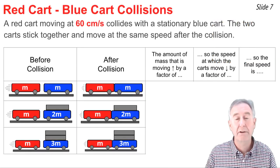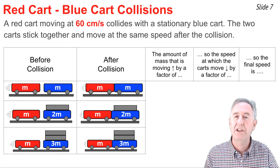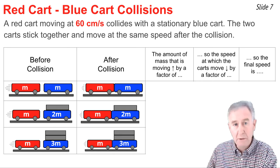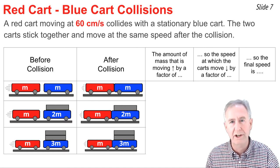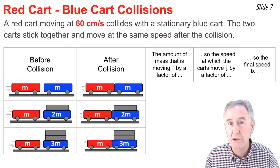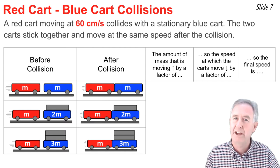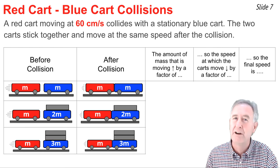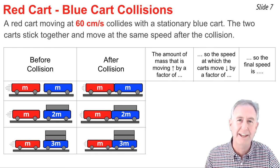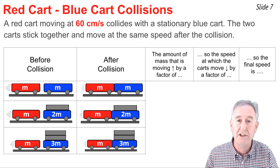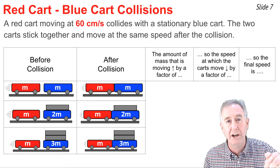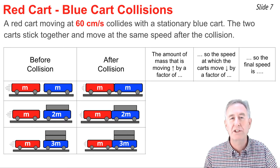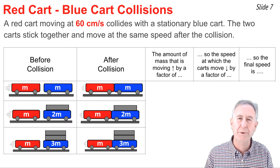Here are three similar problems: a red cart moving at 60 cm/s collides with a stationary blue cart, and they stick together moving at the same speed. Going from row to row in the table, the mass of the blue cart changes, and you need to find the new speed of the combined red-and-blue-cart system using proportional reasoning. Pause the video, fill in the table, then press play to see the answers. A video-guided explanation is also linked in the description.